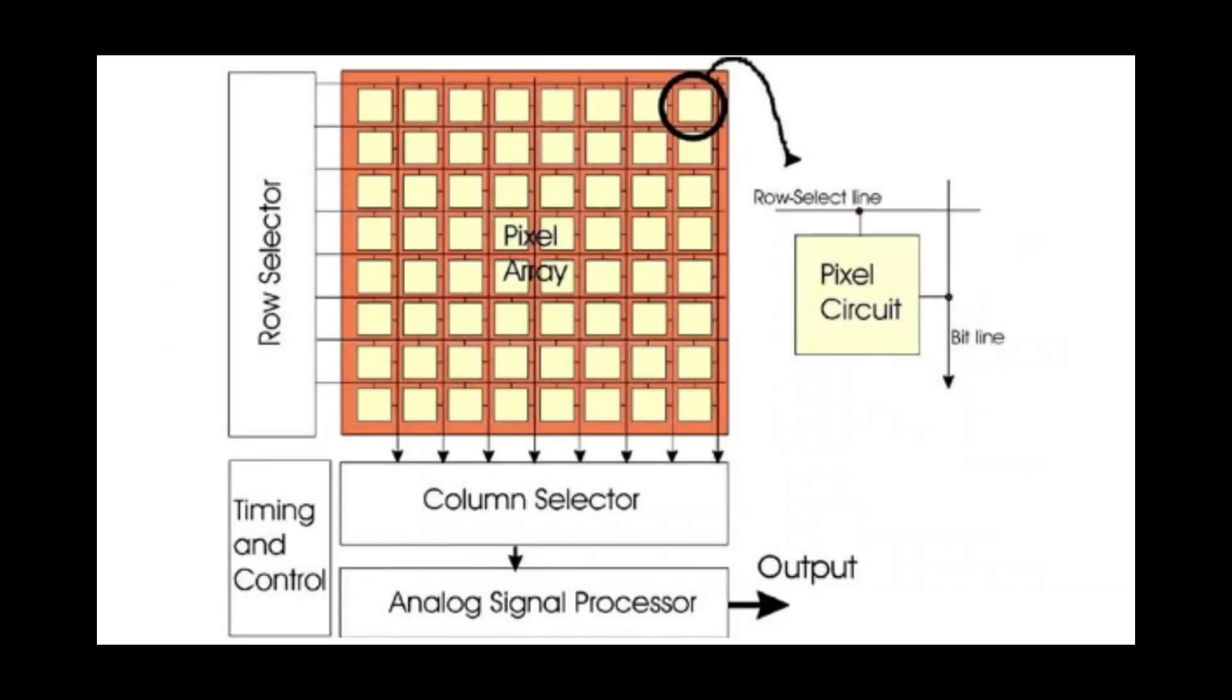The area on the CMOS sensor where light hits is called the pixel array. As the name suggests, it's a huge array of pixels, often over 4096 by 4096.